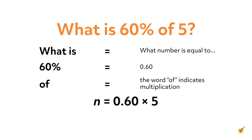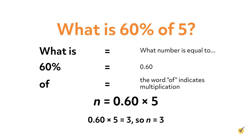From here, solve the equation for n. 0.60 times 5 equals 3, so n equals 3. Therefore, 60% of 5 is 3.